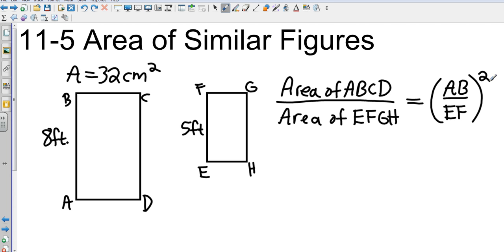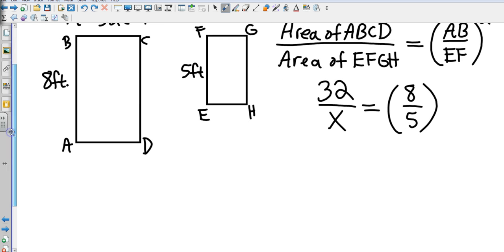So now let's just plug in things that we know. The area of ABCD is 32. The area of EFGH, we do not know. We do know that AB is 8, and we also know that EF is 5. So cleaning this up, we've got 32 over X equals 64 over 25.